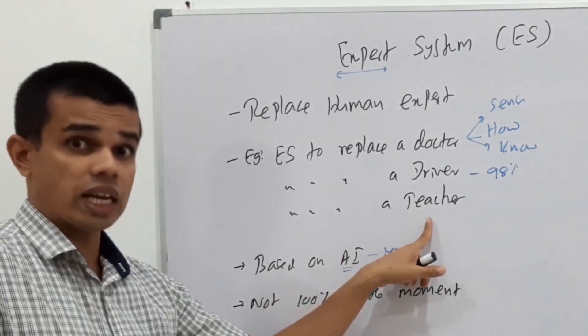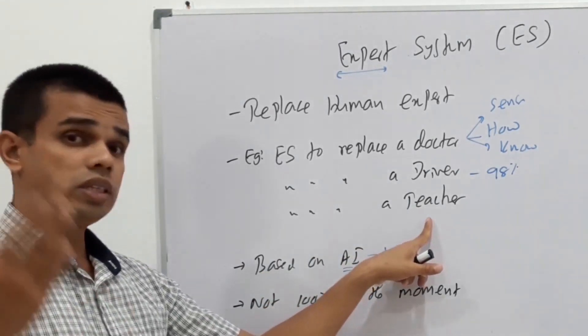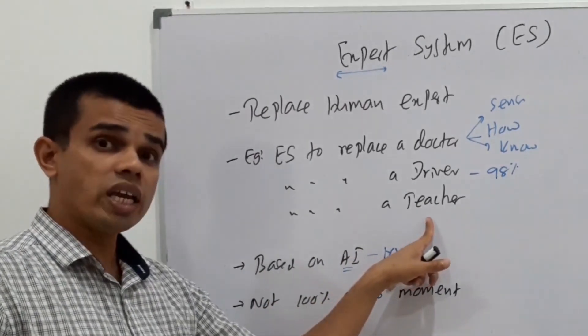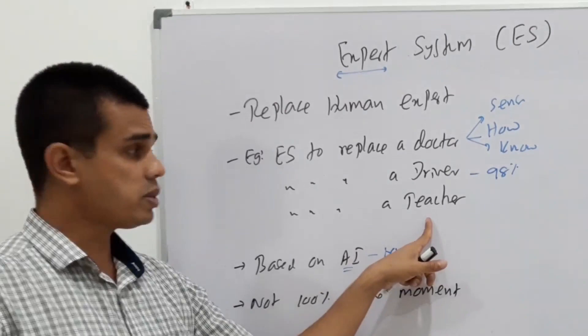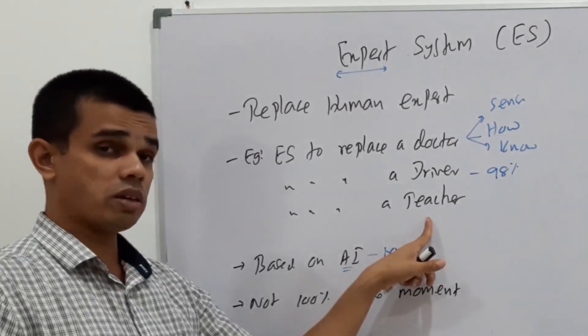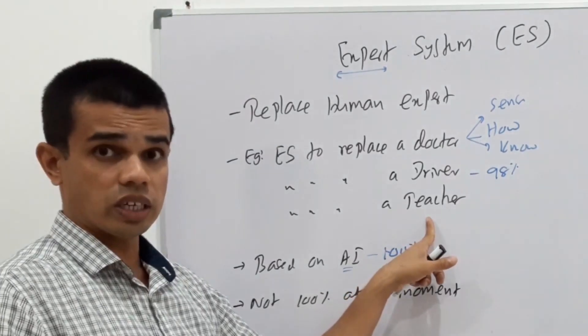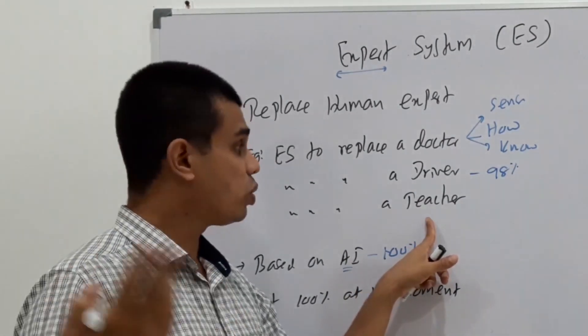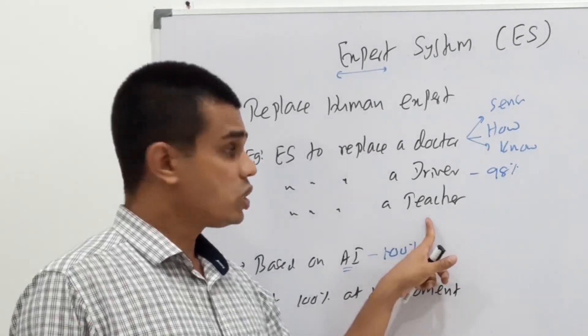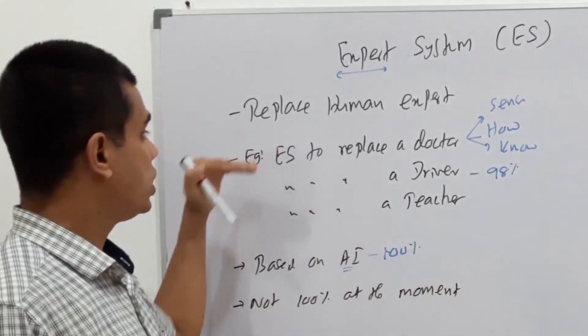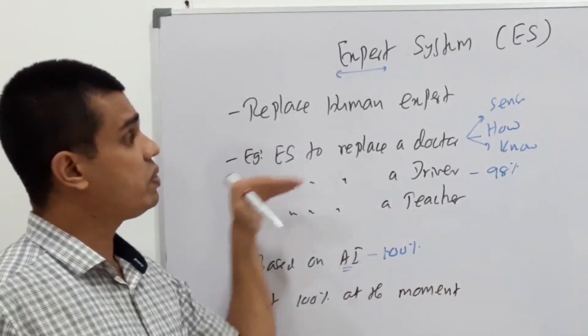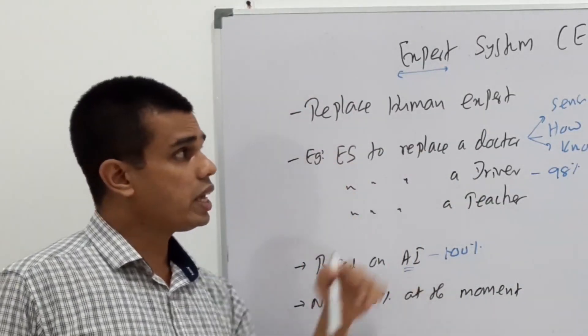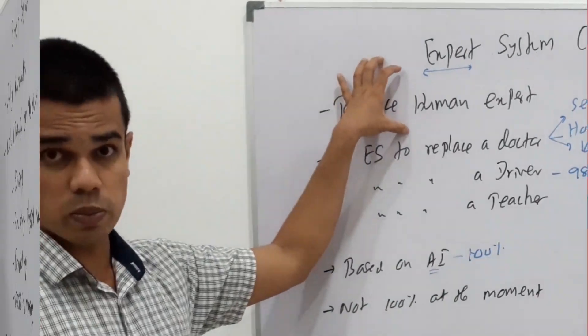Even there are expert systems to replace teachers. So then no need to have a human teacher like us. The computer or the system will teach the child based on the knowledge level of the child. Sometimes there can be intelligent children, so quickly we can teach this. But there are students who are weak, then we have to repeat the same thing over and over again. The same ability is there for the expert system, if it is acting as a teacher. Expert systems are systems to replace human experts.